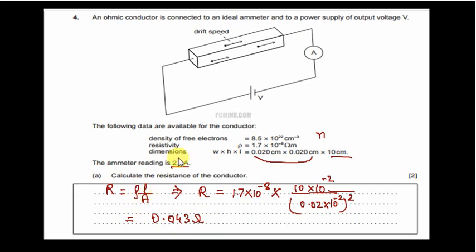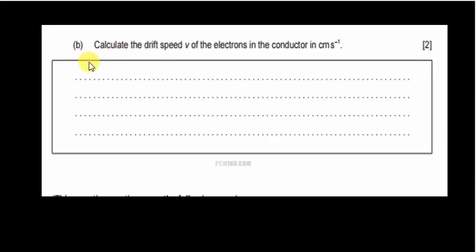The B part of the question says calculate the drift speed V of the electrons in the conductor in centimeter per second. We know that we would write that current and drift velocity are related, because it's a two mark question, so you should mention what you know.